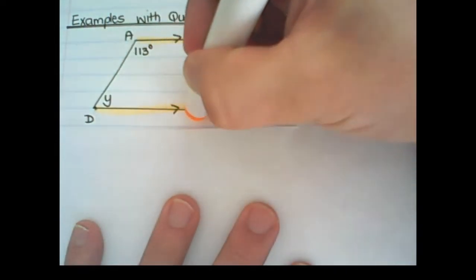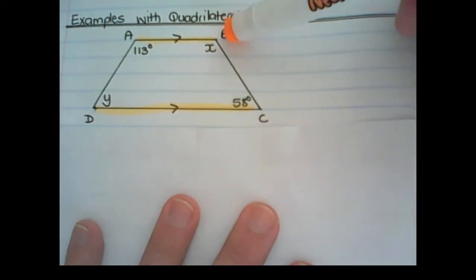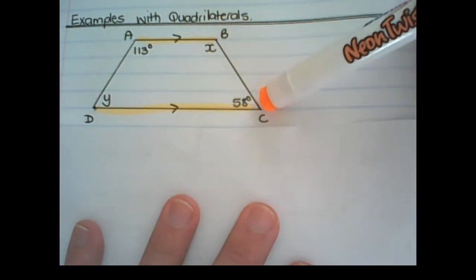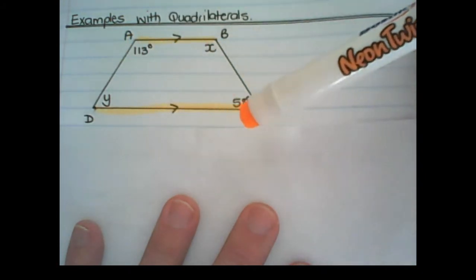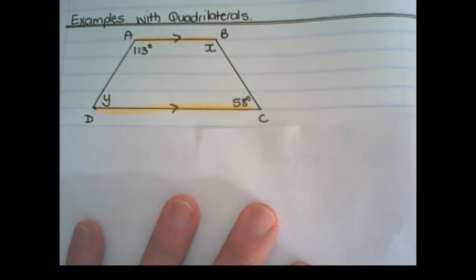Because one set of lines are parallel, or an opposite pair of lines are parallel. And what we want to do is find values for X and Y.